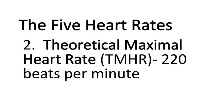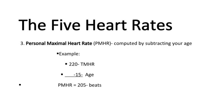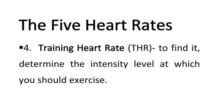Number two — Theoretical Maximal Heart Rate (TMHR): 220 beats per minute. Number three — Personal Maximal Heart Rate (PMHR): computed by subtracting your age from 220. For example, if the age is 15, the PMHR is 205 beats per minute.